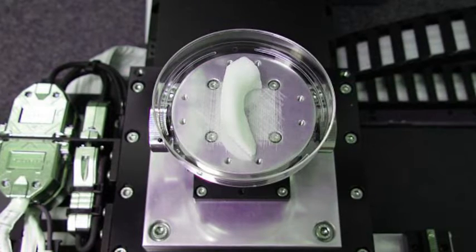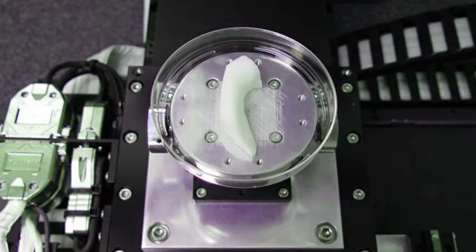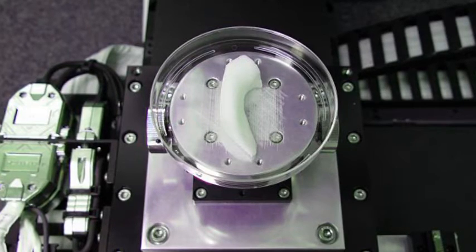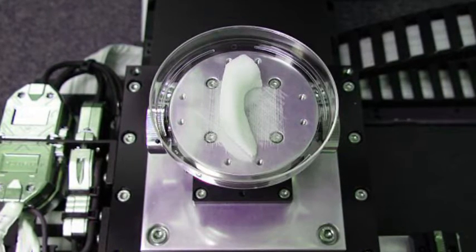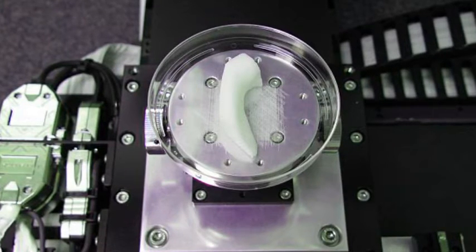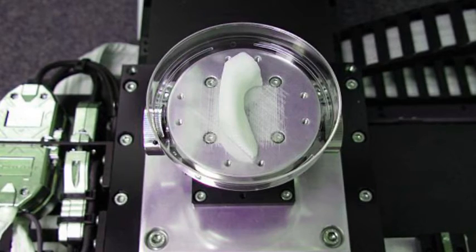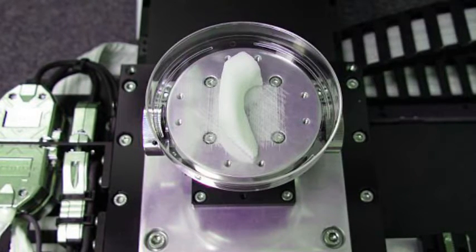However, the resulting structures are often unstable and too fragile to be used as implants. Moreover, because they lack blood vessels, their size is constrained by the diffusion limit for nutrients and oxygen, which is around 200 micrometers. This is too small to make most human tissues and organs.